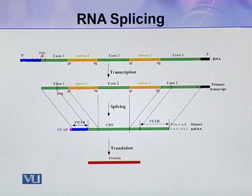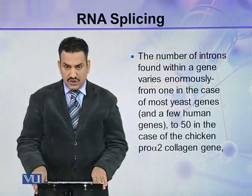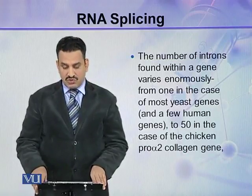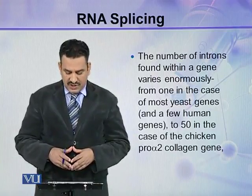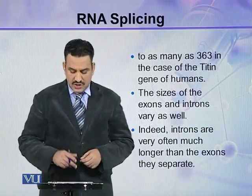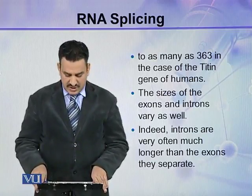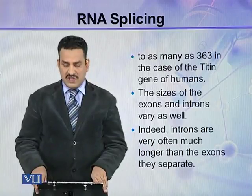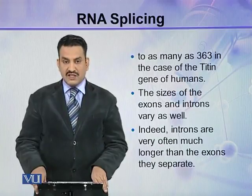This is the structure of a eukaryotic gene. The number of introns found within a gene varies enormously — from 1, in the case of most yeast genes and a few human genes, to 50 in the case of the chicken pro-alpha-2 collagen gene, and as many as 363 in the case of the titin gene of humans. The sizes of exons and introns also vary. Indeed, introns are very often much longer than the exons.